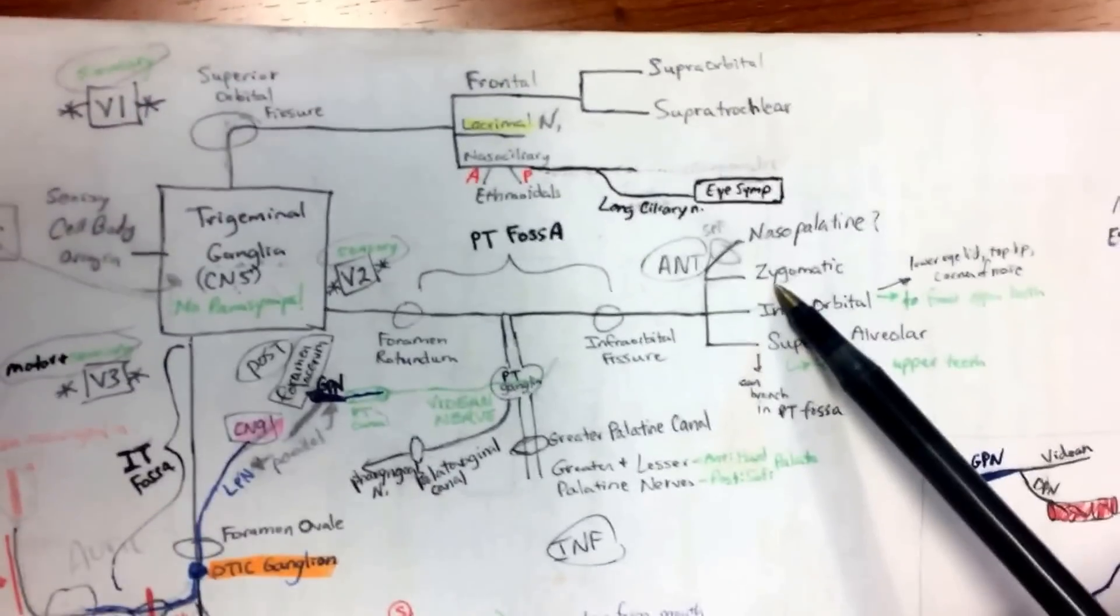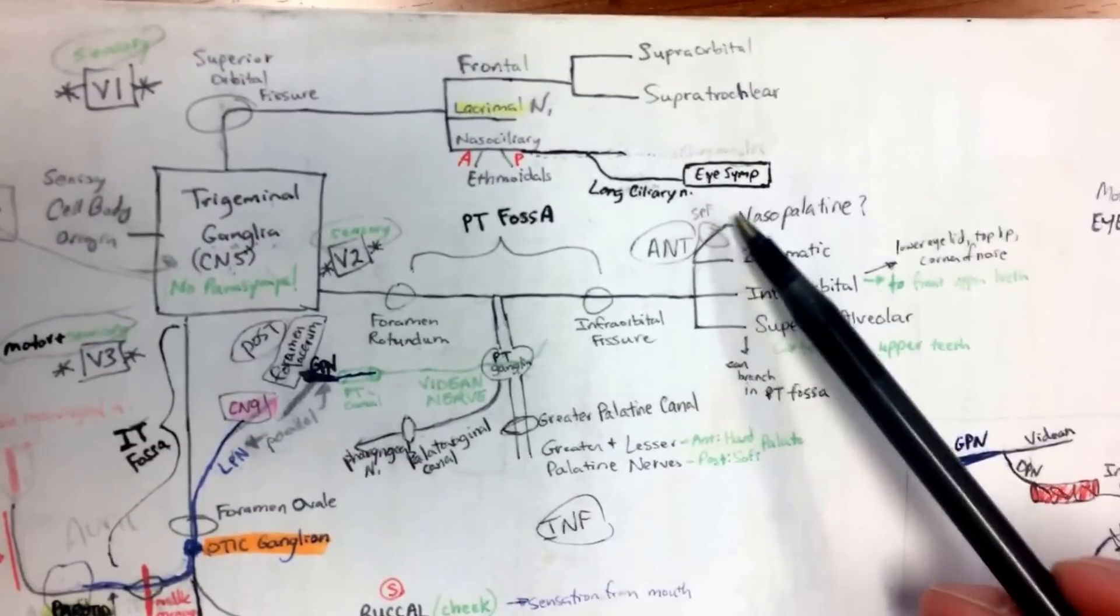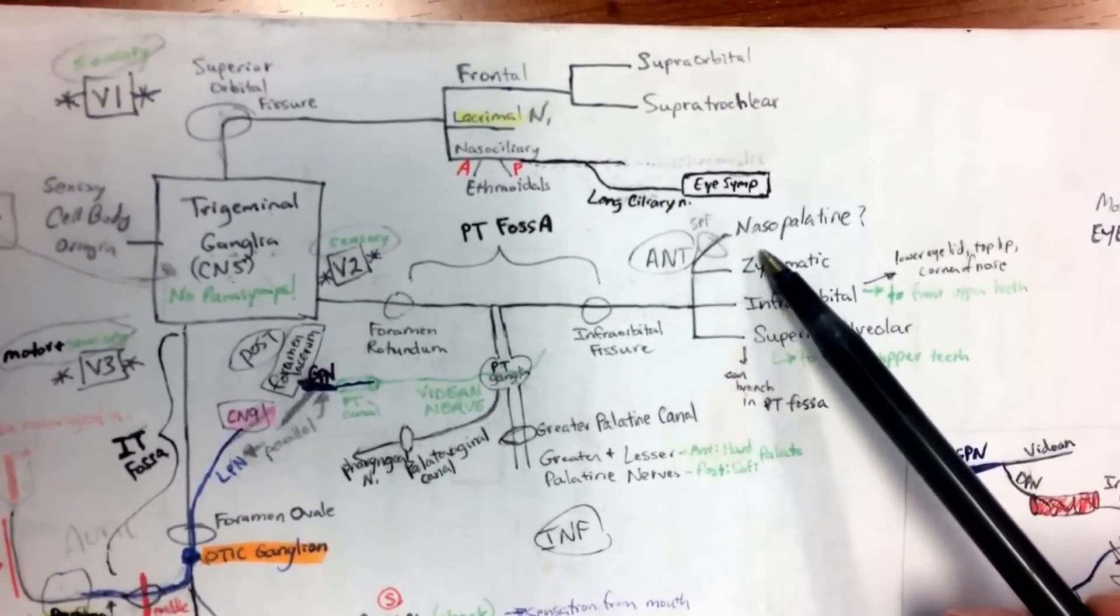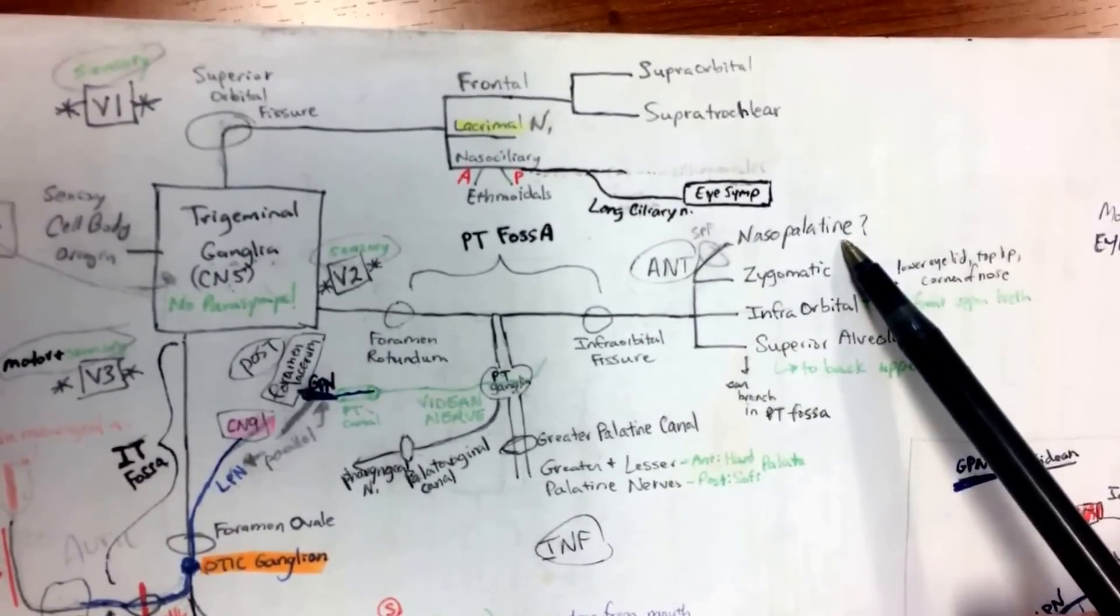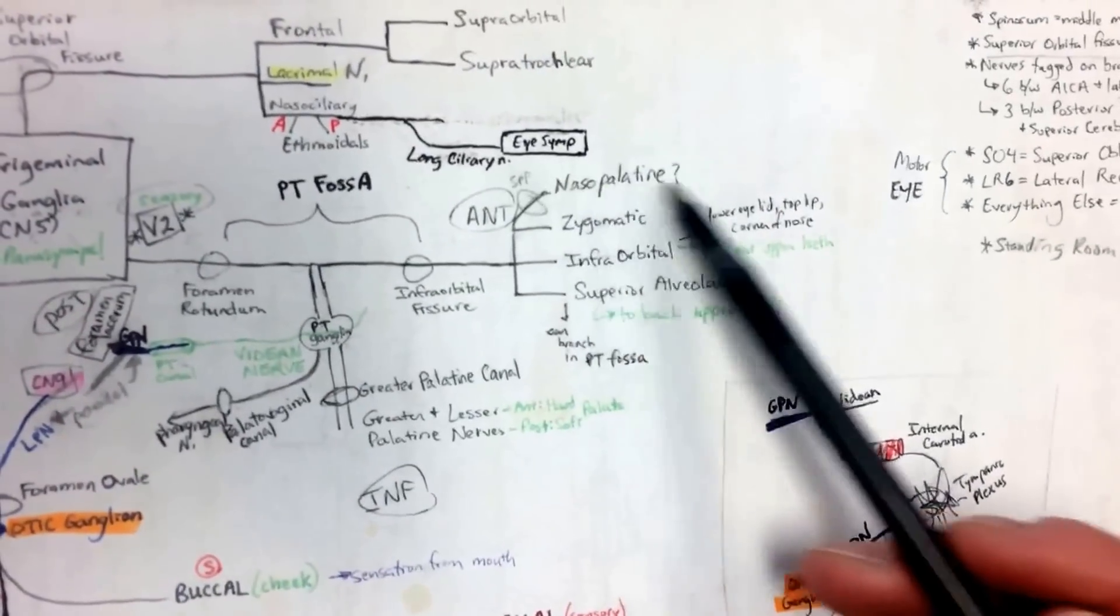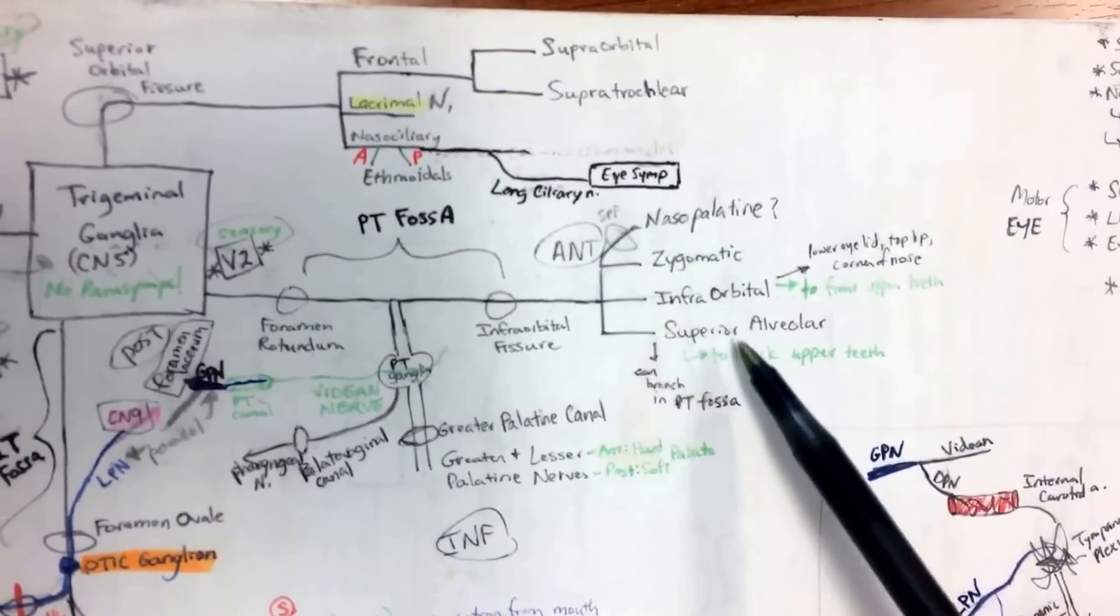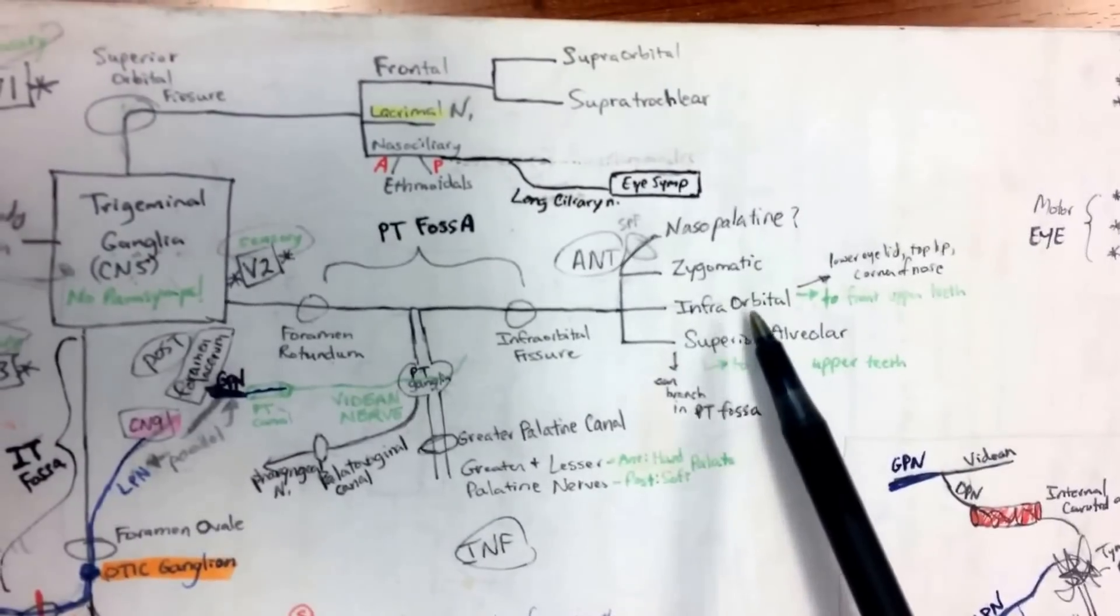If you look at your chicken bucket, if you go superiorly, you're going to go through a sphenopalatine foramen. And sphenopalatine foramen is going to have your nasopalatine nerves. And so that, if you look at your chicken bucket, is going superiorly. So I just kind of do it in there. That's why there's a question mark, but it's good to remember.